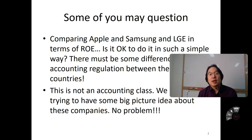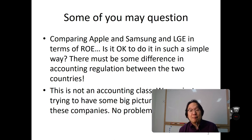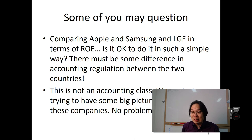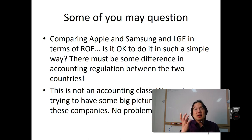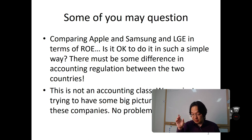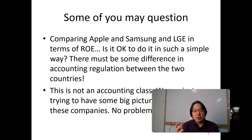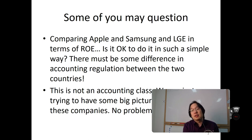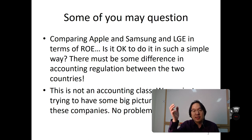Some of you may question last lecture — comparing Apple, Samsung, and LG Electronics, perhaps in terms of ROE. Is it okay to do it in such a simple way? There must be some difference in accounting regulation between the countries. Some of you may question the net income. Those accounting rules may differ so that detailed items may be assigned as non-operating income and extraordinary income — a different classification. Is it still okay to ignore that completely and just compute the ROE in a standardized way and compare different companies from different countries? I say yes. It's okay, no problem.